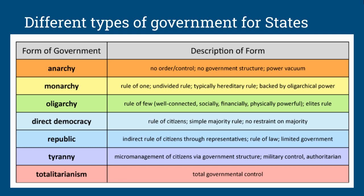Monarchy is when only one person is ruling — think a king or a queen. It is typically hereditary rule, so it's passed down from father to son or father to daughter, and is generally backed by oligarchical power, which means just a few wealthy higher-ups are backing this person.